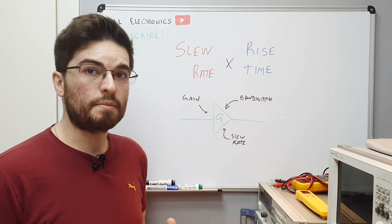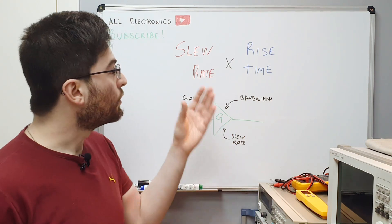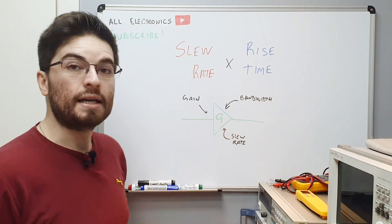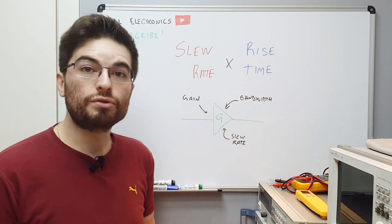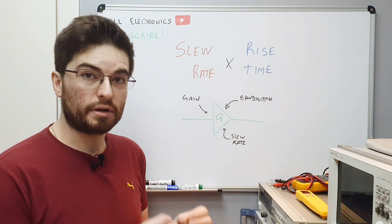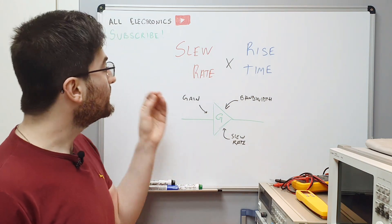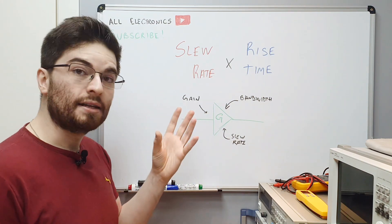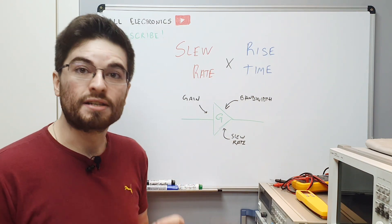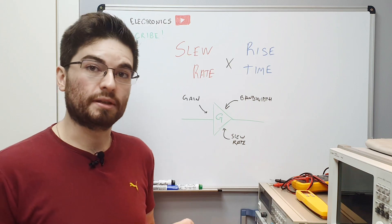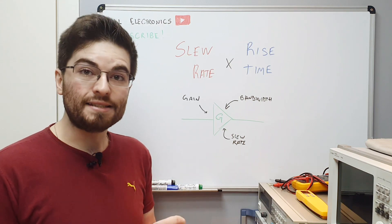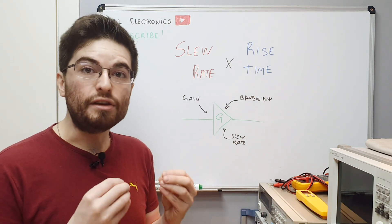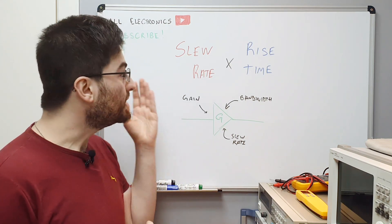They are not the same because rise time is a small signal parameter and slew rate is a large signal parameter, and this is the main difference between the two.